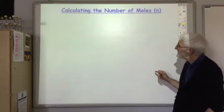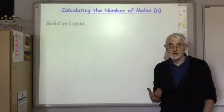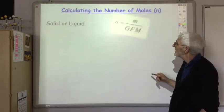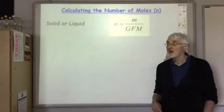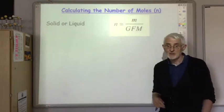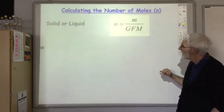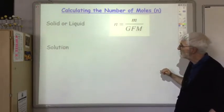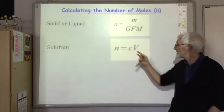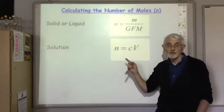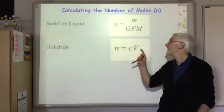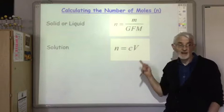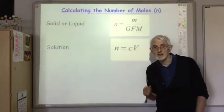If the substance you're interested in is a pure solid or pure liquid, you'd measure its mass and use the equation: number of moles equals mass divided by the gram formula mass — that equation is given in your data book. If the substance is a solution, you need to know its concentration and volume and use n = cv, where concentration is in moles per litre and volume is in litres — also in your data book.